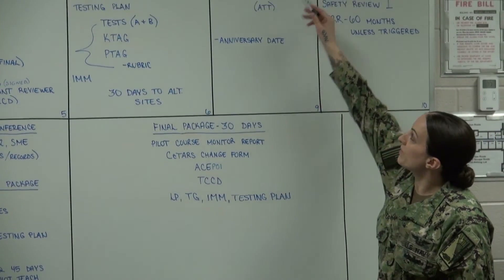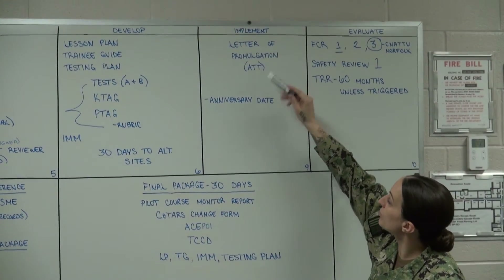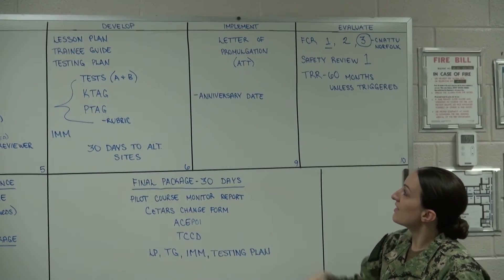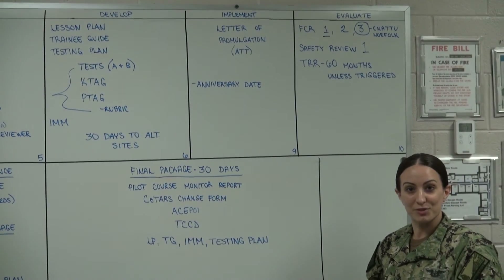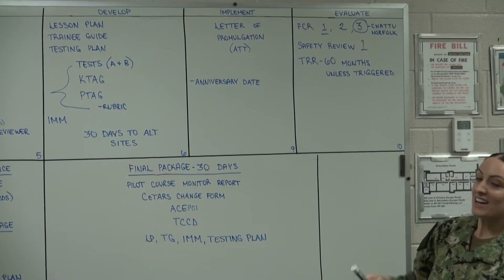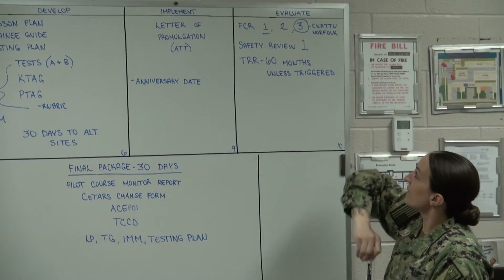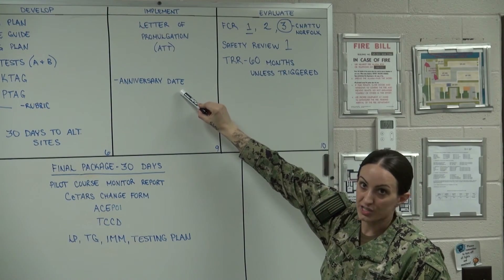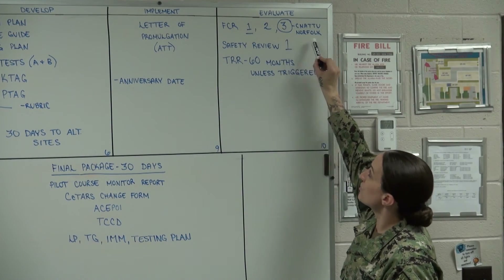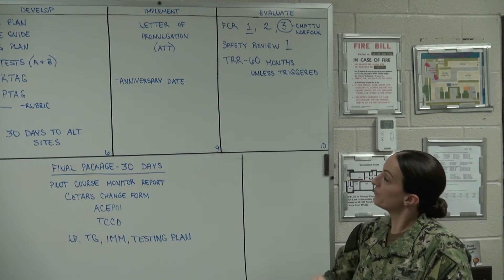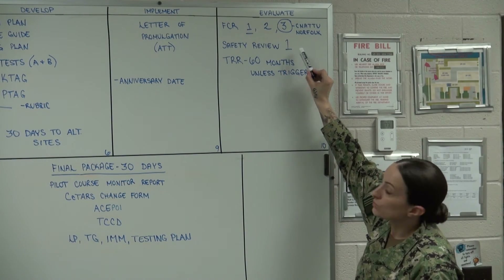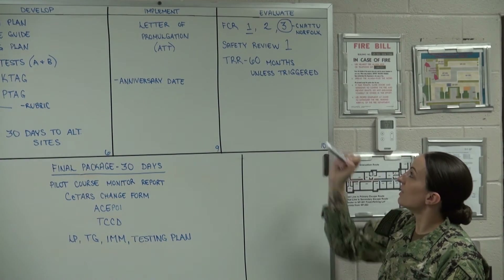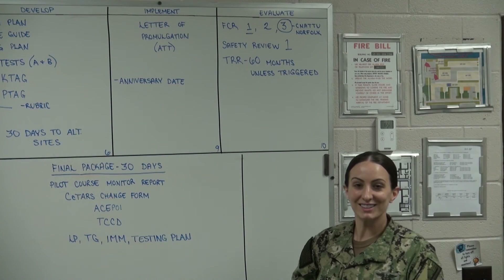From there we'll move on to the Implement phase. In this phase we're going to receive our Letter of Promulgation — this is our authorization to teach the course, and it sets the anniversary date for your course. Last but not least, we will move into the Evaluate phase, where we will conduct a formal course review one year after that anniversary date and every three years after that. Here at CNETU Norfolk we will also conduct a safety review yearly and a training requirement review every 60 months unless triggered. Good luck to you all.